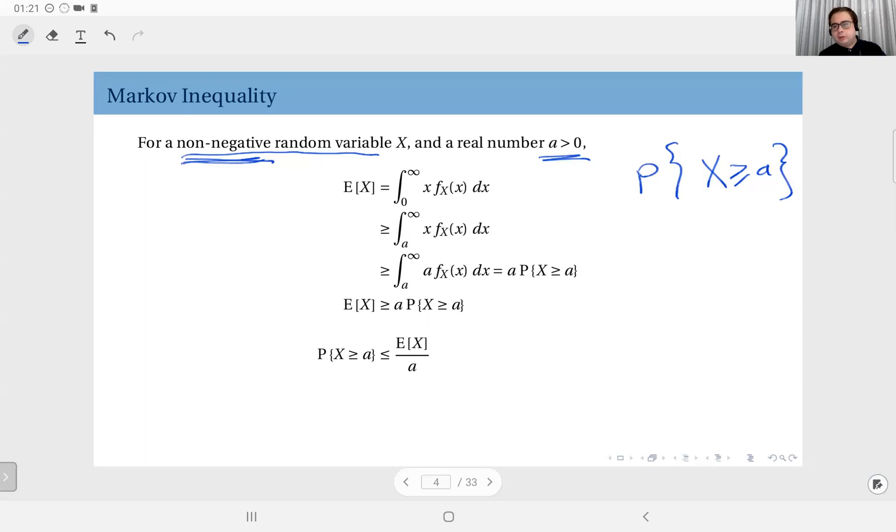We start with the definition of the expectation. Notice the lower bound on the integral is not minus infinity but zero, because we start with the assumption that the random variable is non-negative, which makes sense in a lot of situations. For instance, waiting times are positive, heights are positive, the amount of rainfall is non-negative wherever you measure it. So there are a lot of quantities which makes sense to assume non-negative. This is useful in a lot of scenarios.